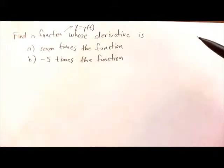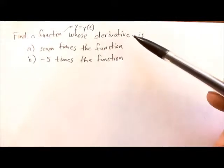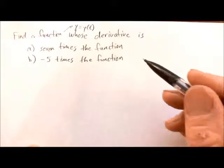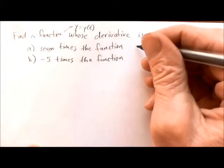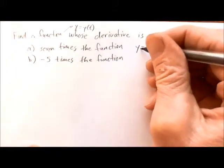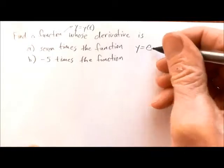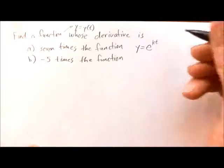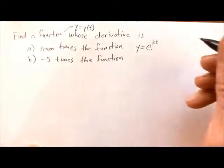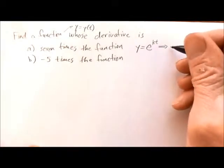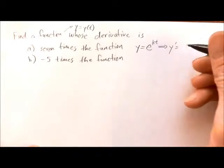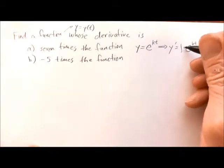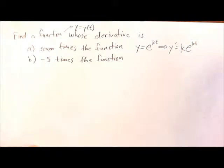One thing we know is that when we take the derivative of an exponential function, we essentially get that function back. So we might want to guess that we're looking at e to some power — maybe a times e to the k times t. When we take the derivative, y prime is also e to the kt, but we multiply by the constant k.